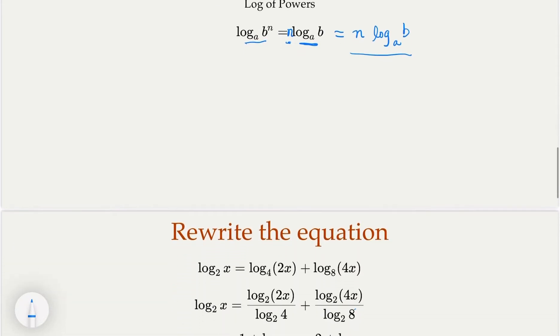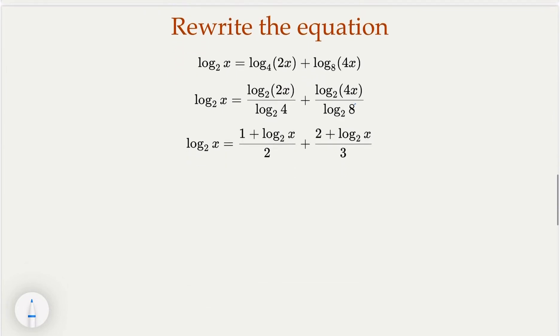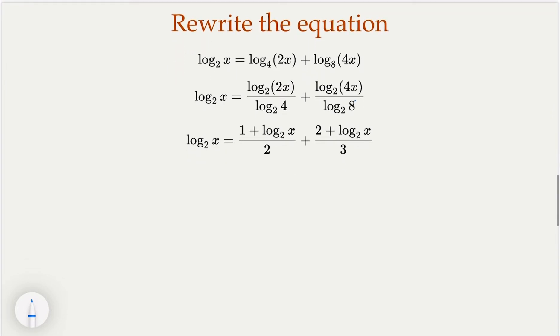So let's rewrite the equation using the change of base. This is the original equation here. We're going to change to base 2. So left hand is unchanged. Here comes the ratio on the right hand side. And notice that 4 is nothing but 2 squared, so this is 2. 8 is 2 to the third, so this is 3.